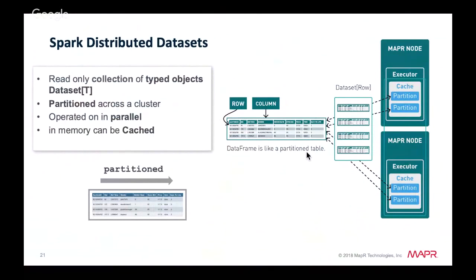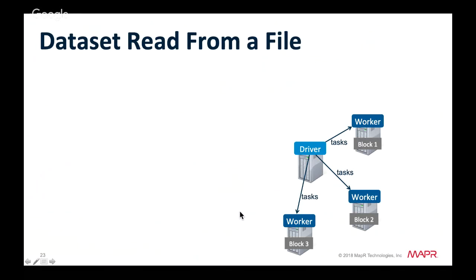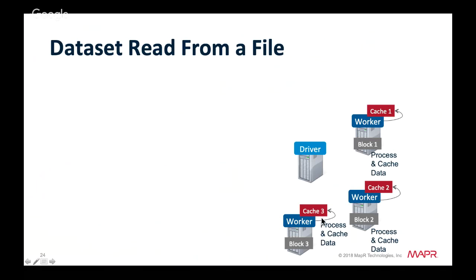A quick overview of Spark distributed datasets and DataFrames: a dataset is a distributed collection of objects spread across multiple nodes in a cluster. A DataFrame is a dataset of row objects — like a table partitioned across a cluster. Tasks are sent to worker nodes, each reads a block of data from a distributed file, and caches it as a partition in a dataset or DataFrame.